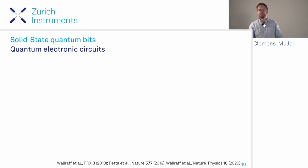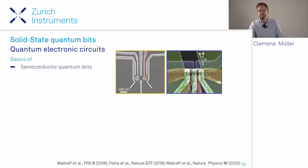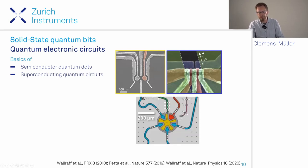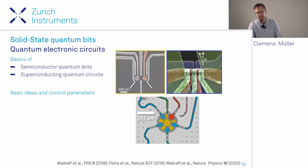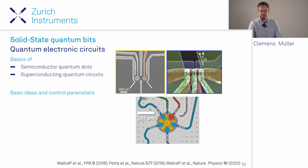I'll introduce the basic ideas of how these structures can be used as qubits and what control parameters we can use—things like level splitting, the energy difference between ground and excited state, how we can flip between states, and how all of this relates to decoherence.